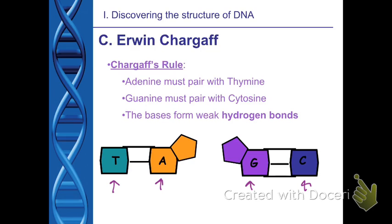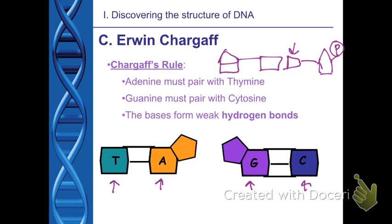The bases bond using hydrogen bonds. So here's a reminder: the phosphate group forms the backbone, and the bases pair across. If one side has an A, the other must have a T. If one side has a G, the other side has to be a C — that's Chargaff's base pairing rule.